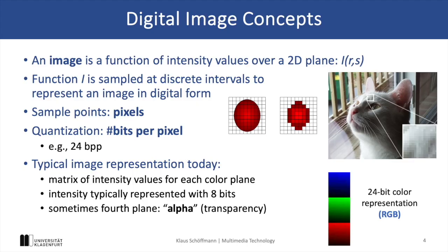This, again very similar to audio conversion, relies on converting an analog signal to a digital one with sampling and quantization. The resolution we choose for our target image determines the sampling granularity in terms of our picture elements, or pixels.